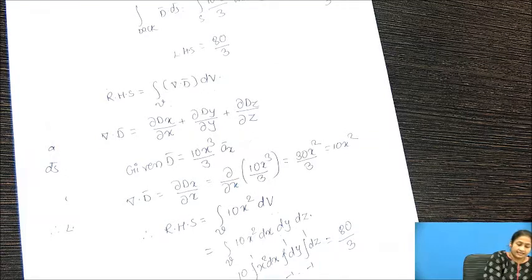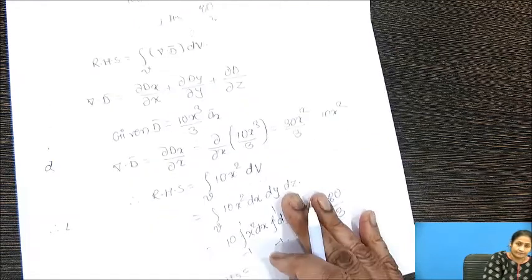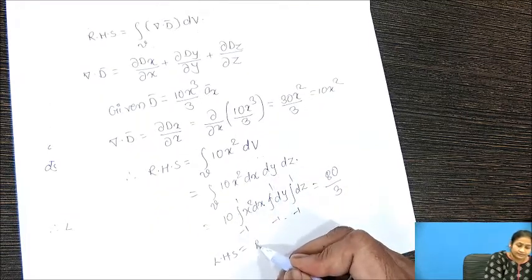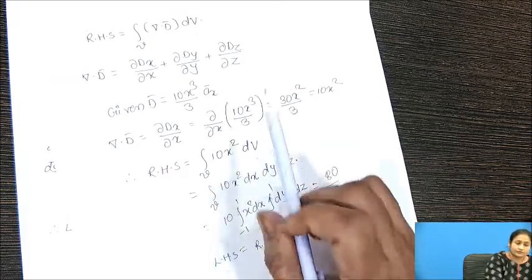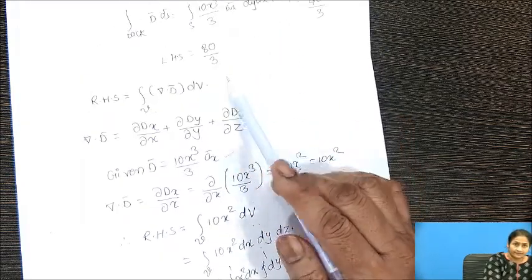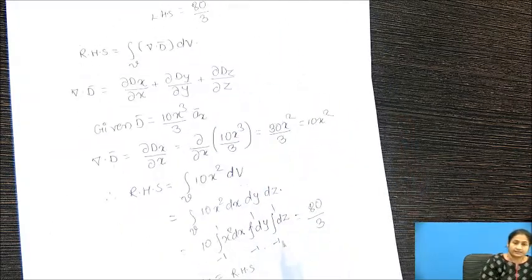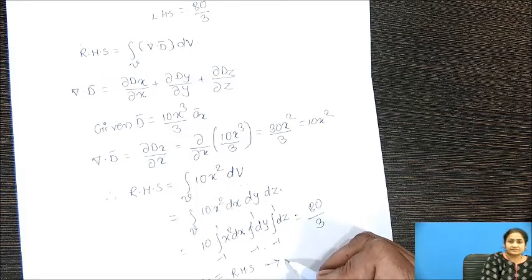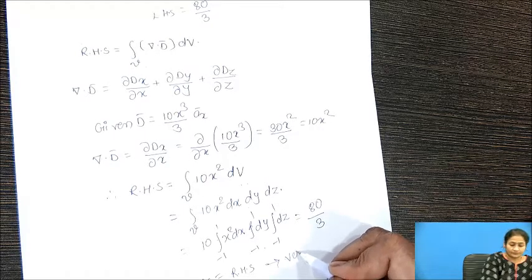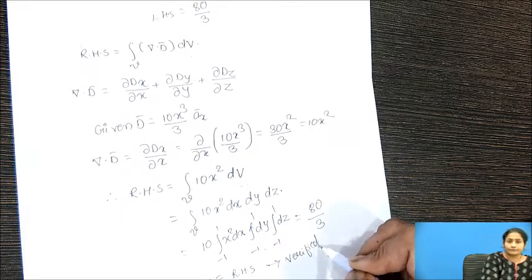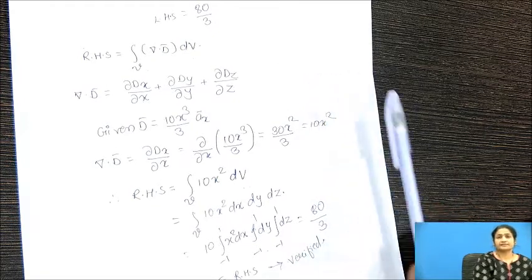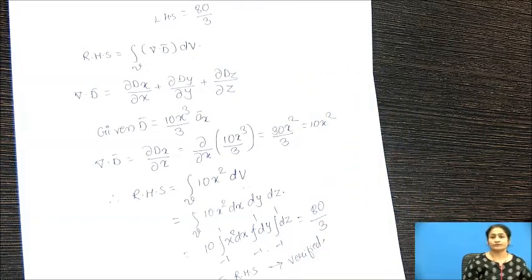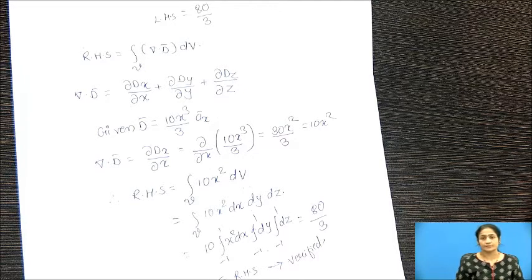This proves that LHS equals RHS. Our LHS value was 80/3 and the RHS value is also 80/3. This is how both sides of the Divergence Theorem have been verified for this problem statement.